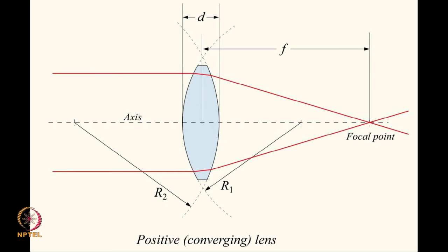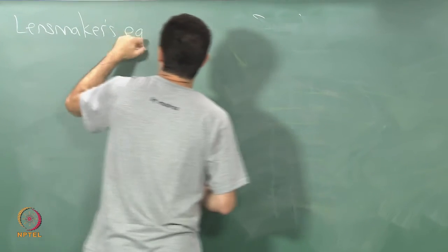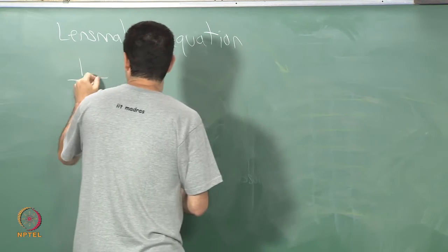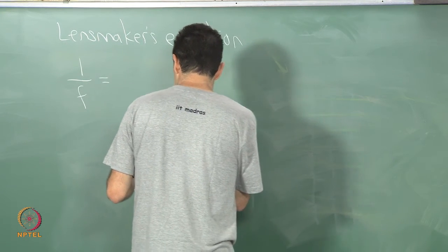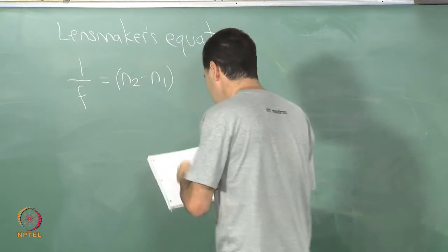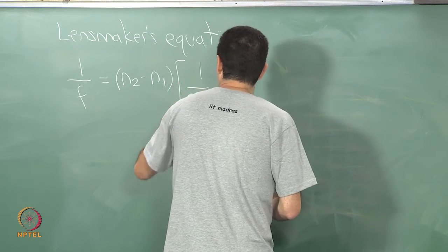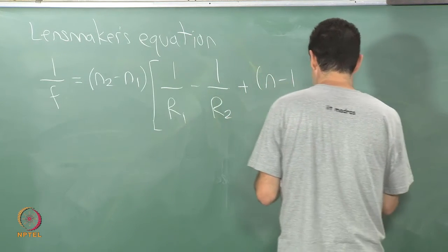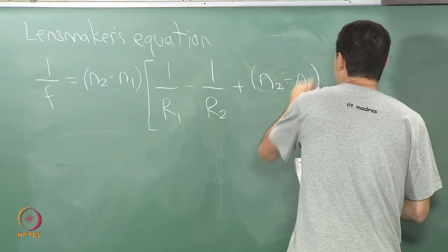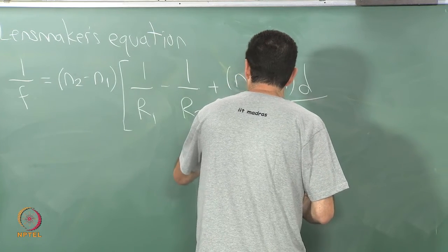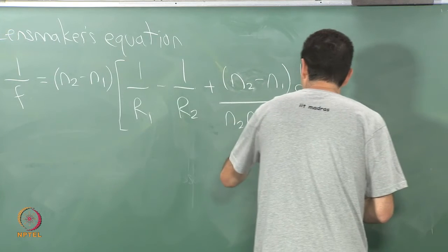To determine the focal point, we have the following lens makers equation. 1 over the focal length is equal to (n2 minus n1)(1 over R1 minus 1 over R2) plus (n2 minus n1)d divided by (n2 times n1 times R1 times R2). I'm writing it in a little more general form than I have in my notes here, but it should be ok.